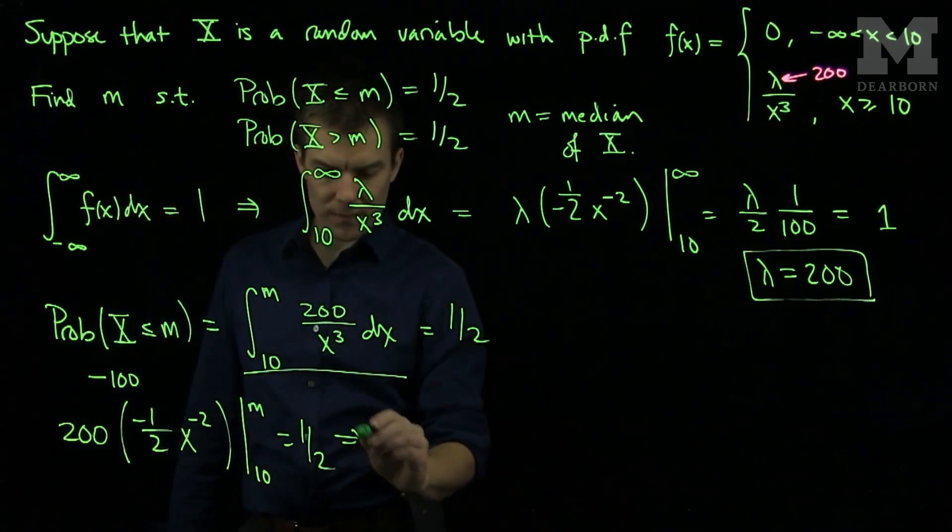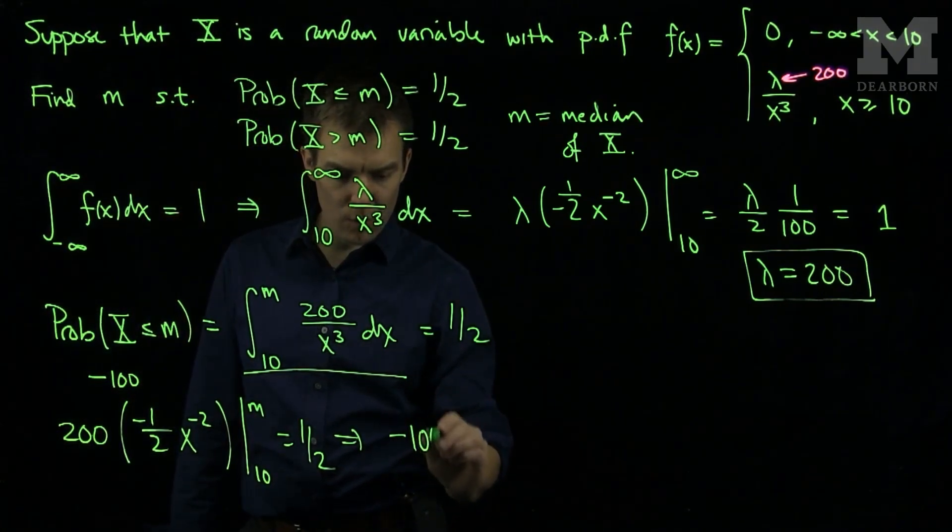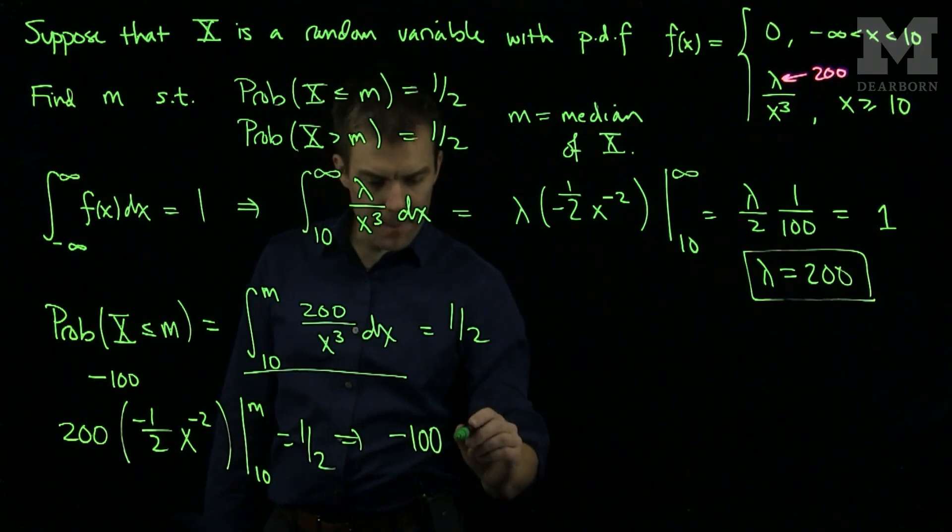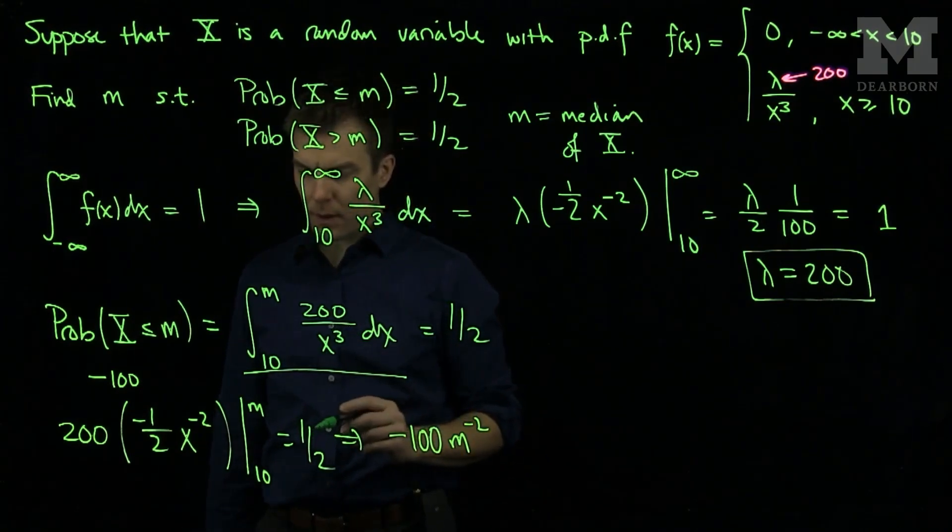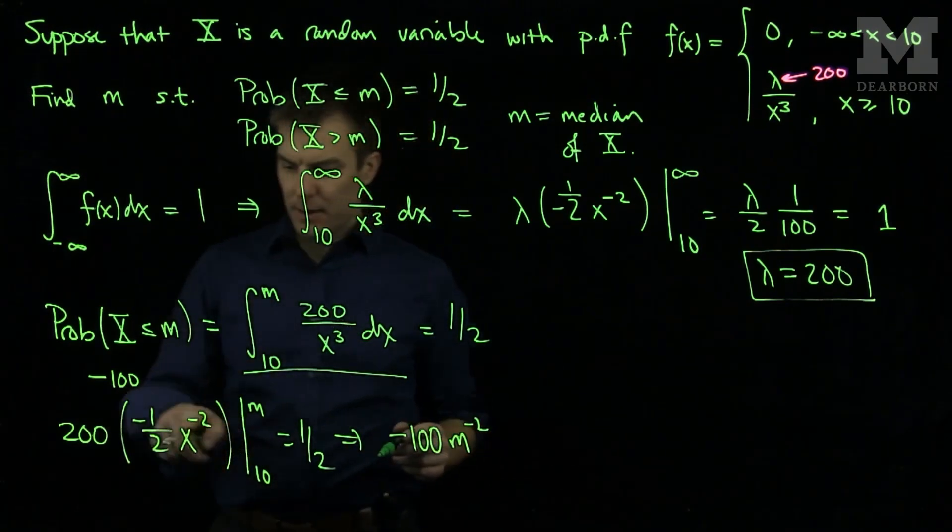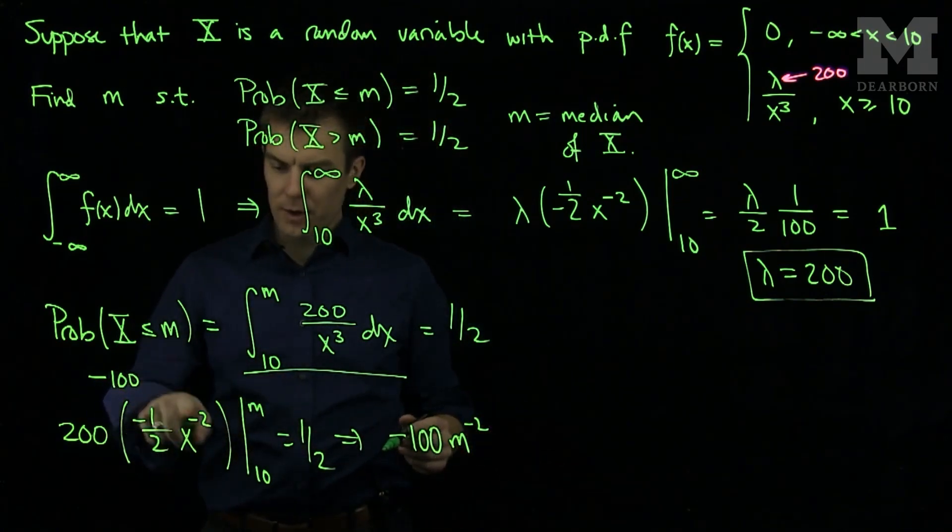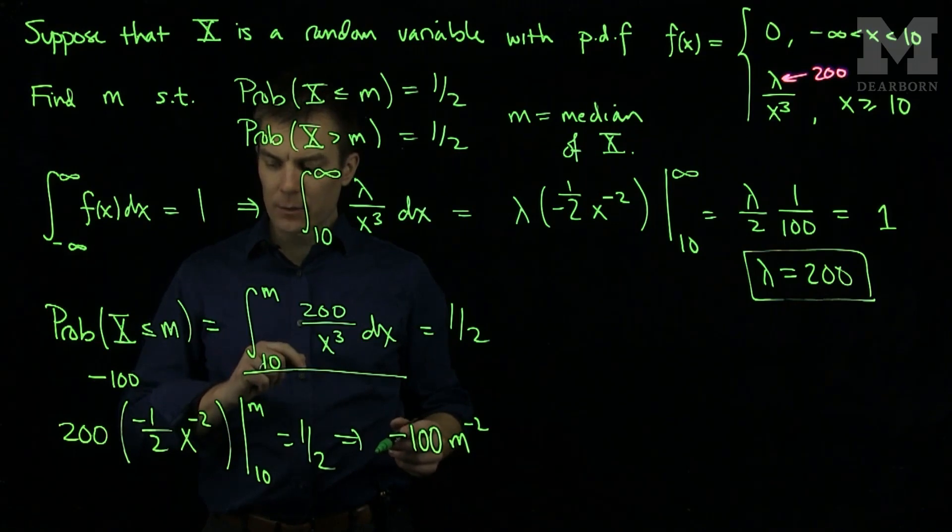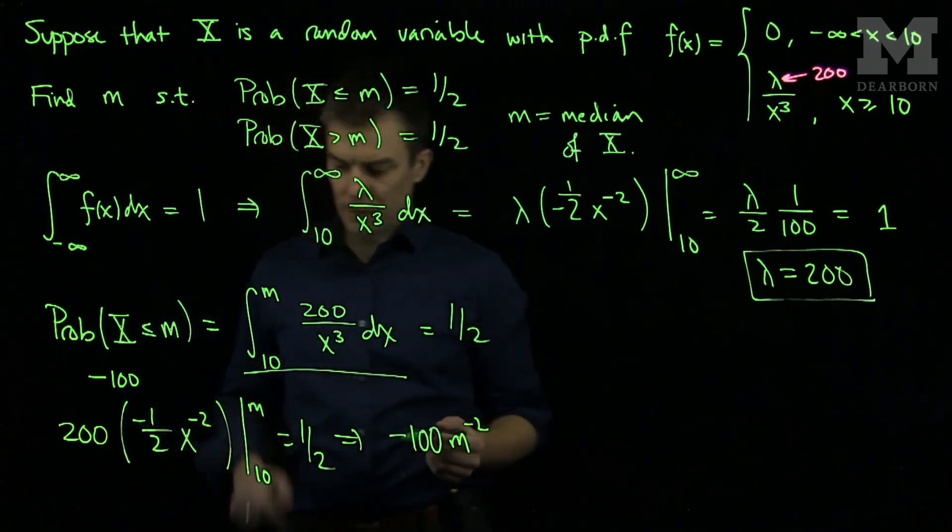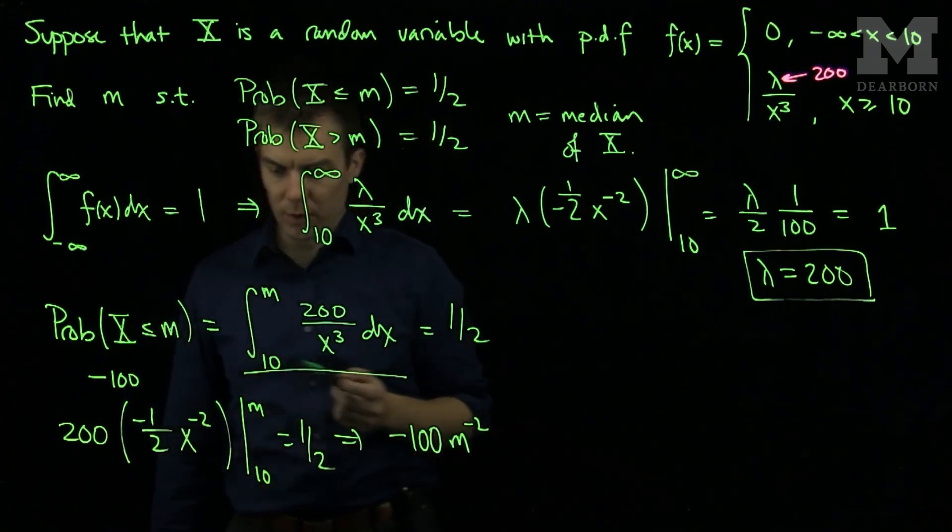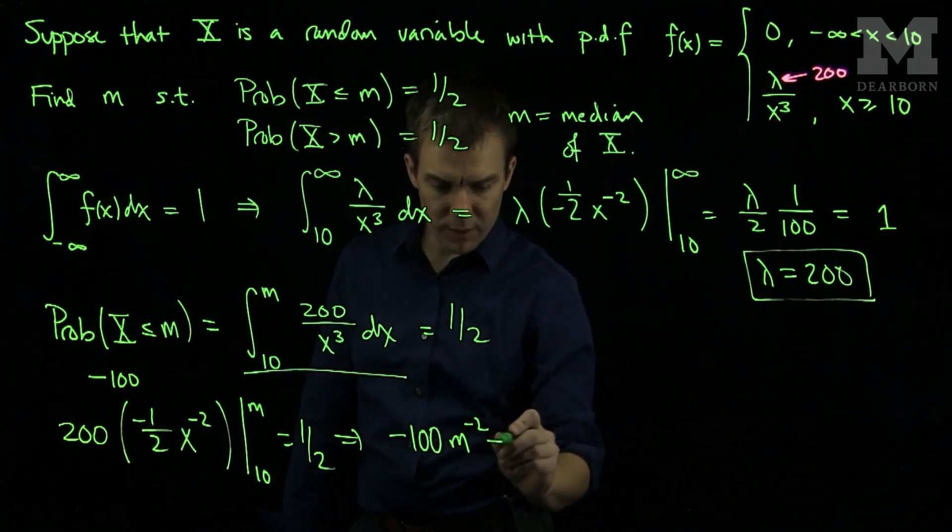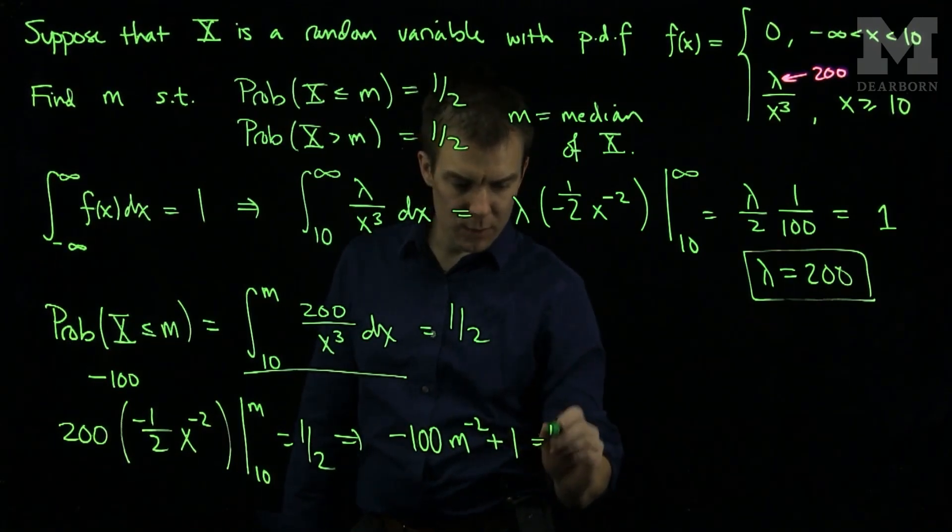So this equation tells me that negative 100 m to the negative 2 power, and then if I plug in the bottom I am going to get a plus. Now I have 100 and then I will plug in 10 and that will just give me 1. So I have a plus 1 is equal to 1 half.